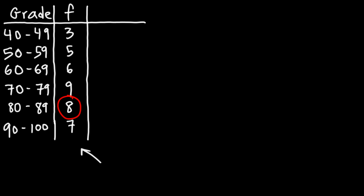Eight students had a score between 80 and 89. With this data, how can we calculate the average test score of the students in this class? It's important to understand that we cannot compute an exact mean for the grades because we just don't know the individual data values in the data set.